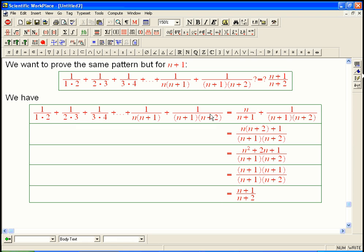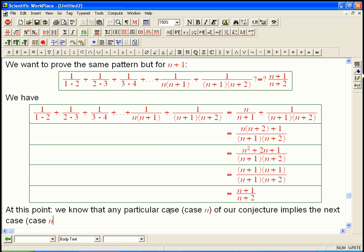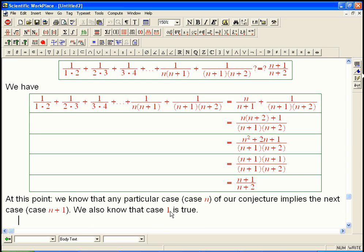So we've now proved the next case. So what we have now, at this point we know that any particular case, say case n of our conjecture, that the truth of that implies the truth of the next case, which we've just labeled as case n plus 1. And so we also know that case 1 is true. So hence case 2 is true, because we just apply this where n equals 1.